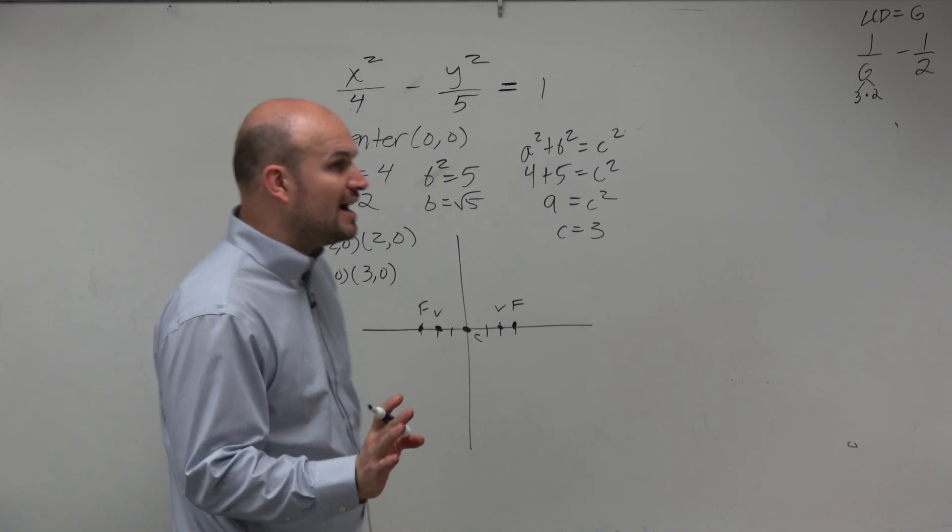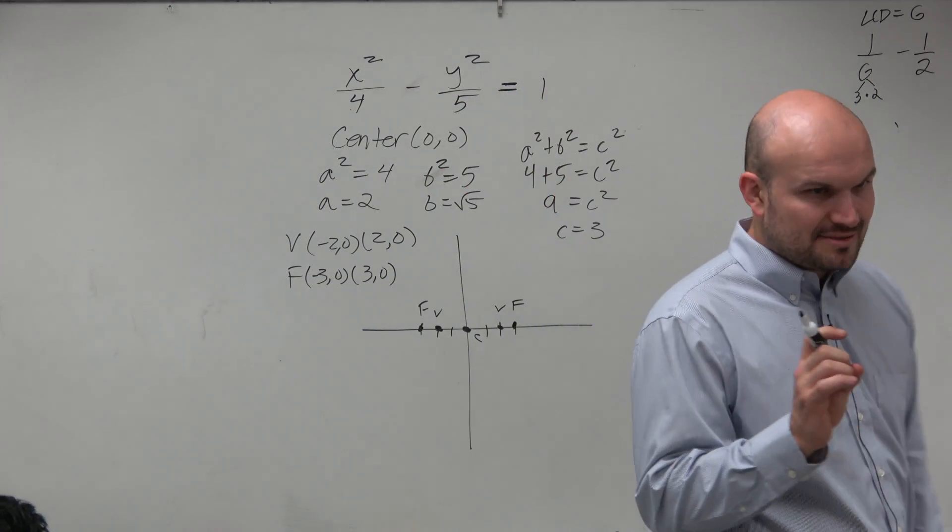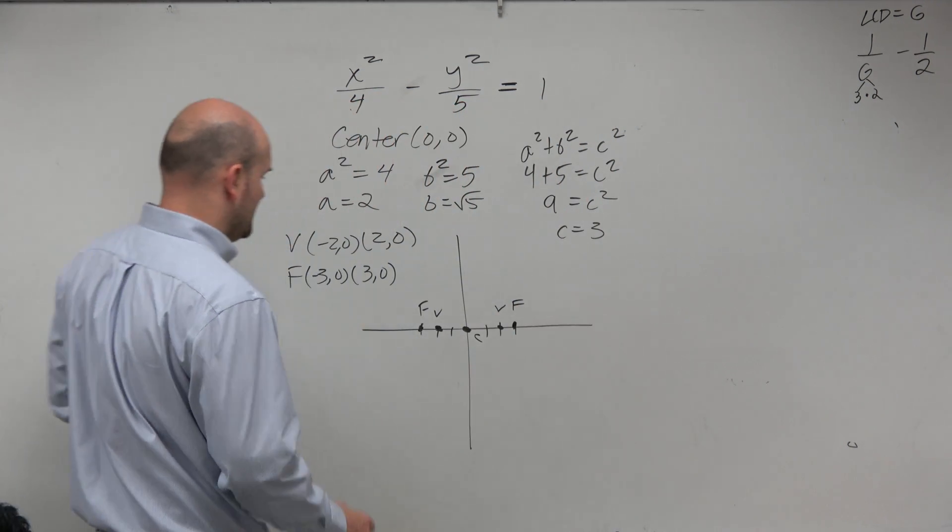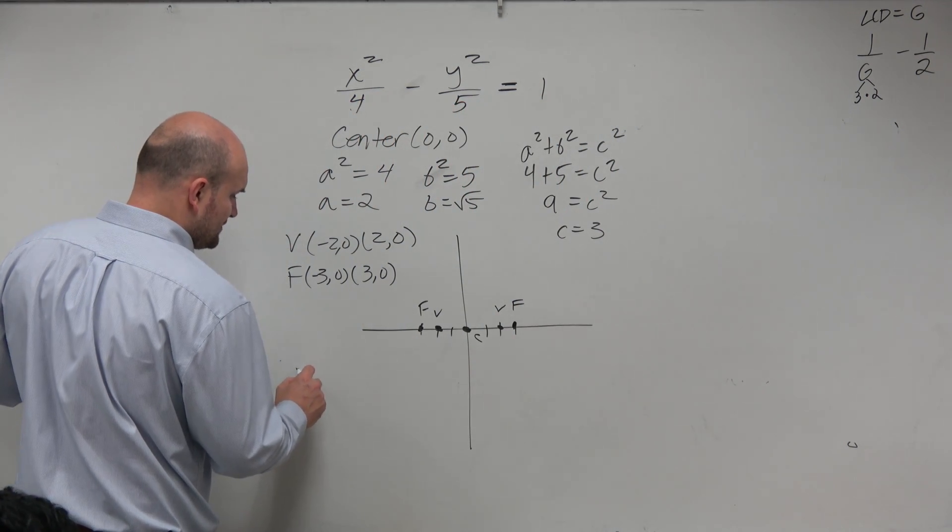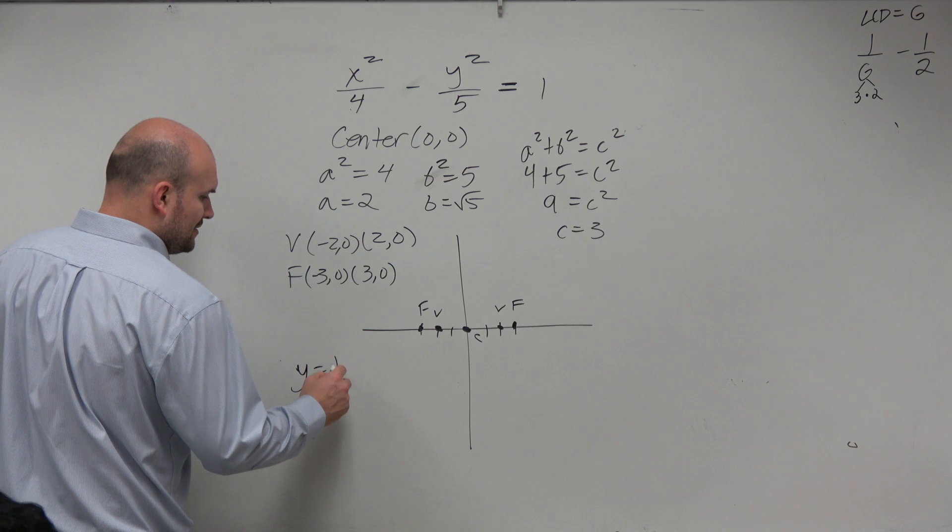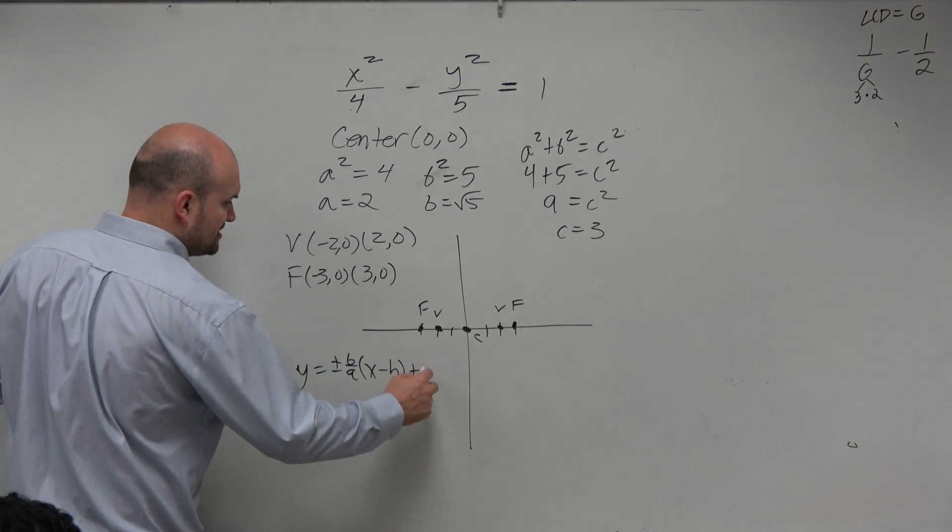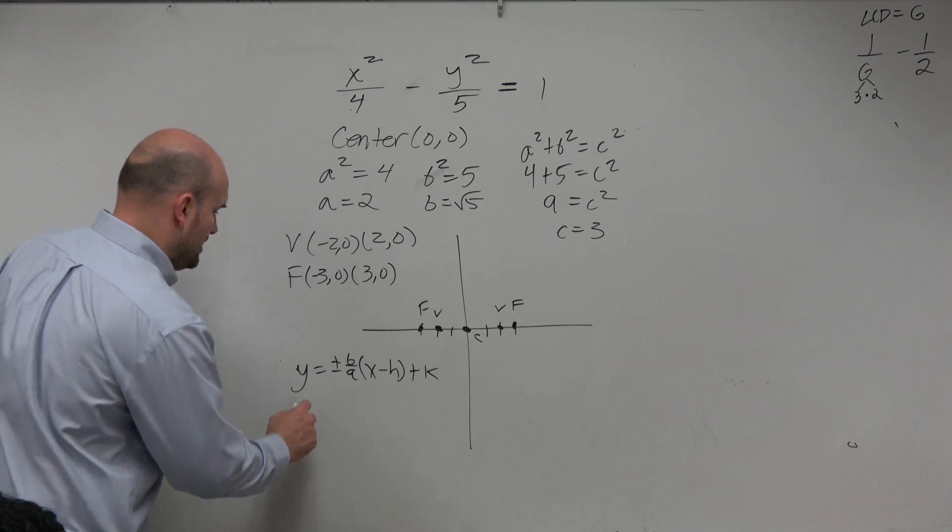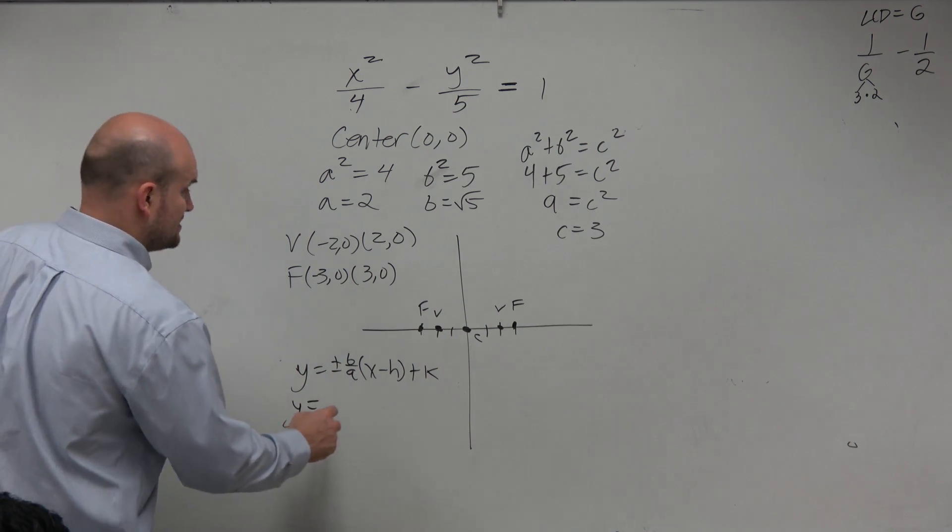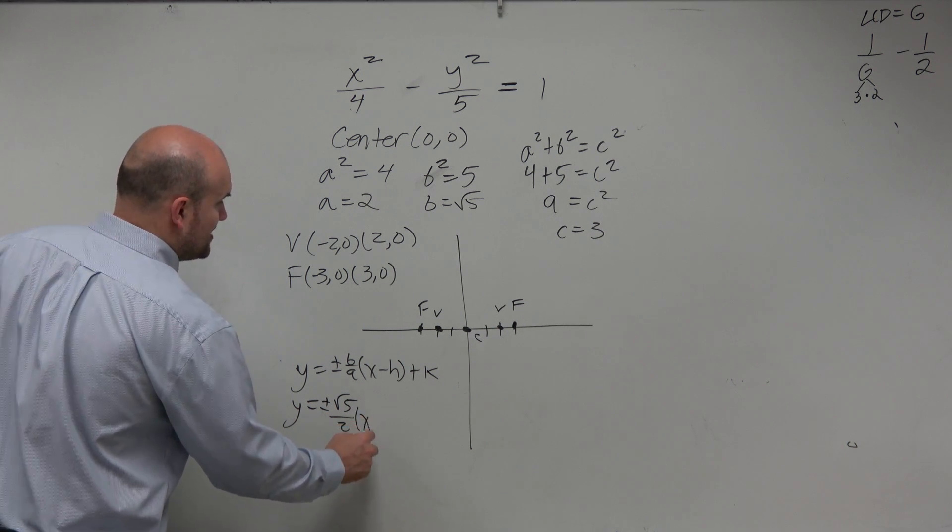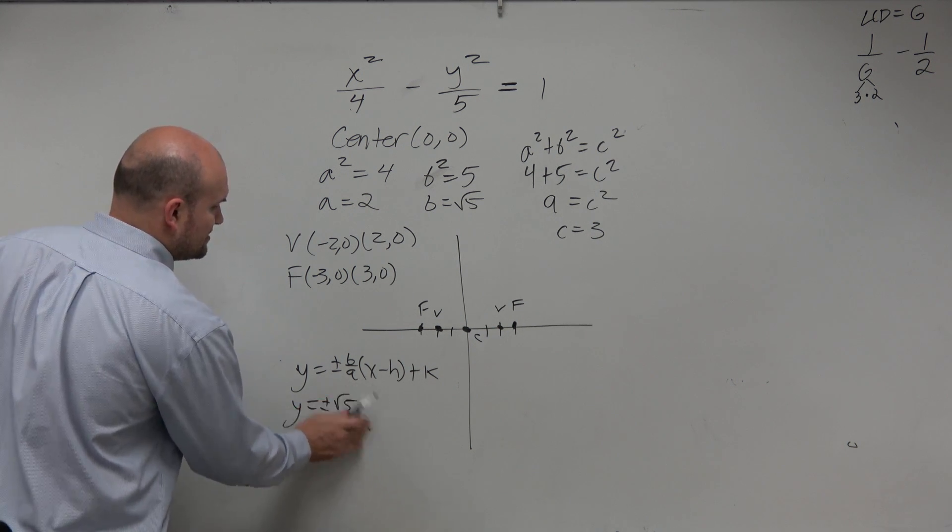Now, before I sketch a graph, I'm going to want to identify the asymptotes. So remember the equation of the asymptotes when you have a horizontal transverse axis, I'm sorry, is y equals plus or minus b over a times x minus h plus k. So I just plug in the numbers. It's really kind of that simple. Plus or minus the square root of 5 over 2 times x. Well, it's just going to be x and 0.